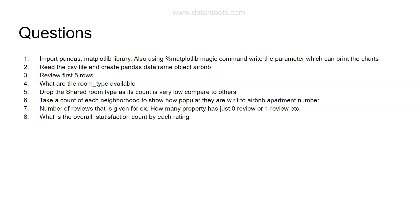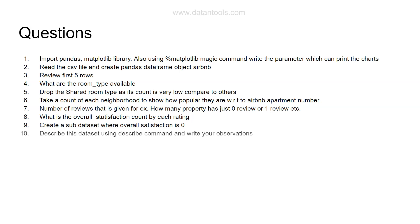Question eight: find the overall satisfaction count by each rating. Question nine: create a sub-dataset where overall satisfaction is zero. This is interesting — from the main airbnb DataFrame, create a subset based on the condition that overall satisfaction equals zero, so you can explore why ratings aren't being given, which property types are affected, and what Airbnb as a company can investigate about those properties.